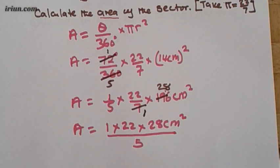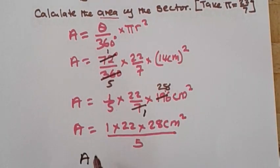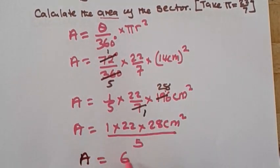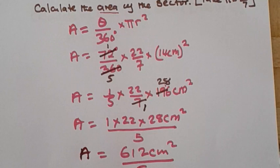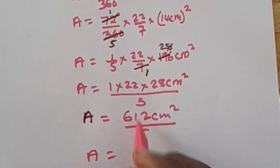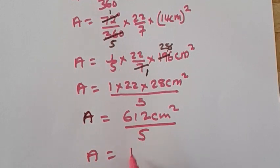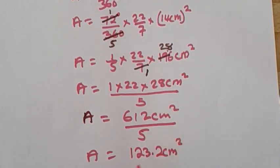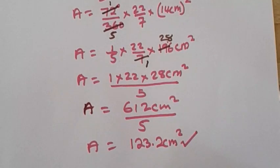Next, 1 times 22 times 28 is 612. So Area = 612 square centimeters divided by 5. That gives us 5 into 612 equals 123.2 square centimeters as the area of the sector.